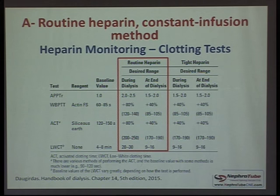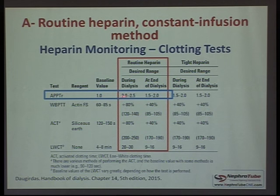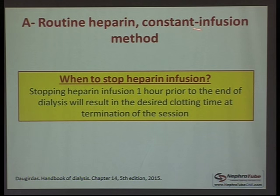Heparin can be monitored by clotting tests; in practice, activated partial thromboplastin time (aPTT) is what's commonly available. During intermittent hemodialysis, it is important to maintain aPTT of about 2 to 2.5 times normal during dialysis, and 1.5 to 2 times normal at the end. It is important to stop the infusion about one hour before the end of the dialysis session to achieve the desired clotting time at termination.